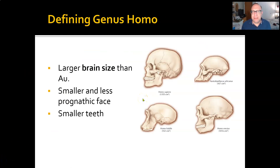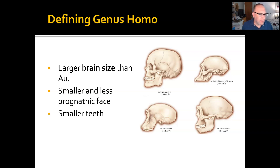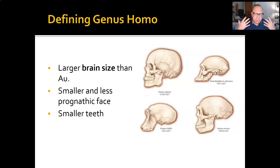The first thing you'll notice about genus Homo in general is that it is the first time we have an increase of brain size that begins to outpace increases in body size. All of genus Homo has larger brains than australopithecines, significantly more, and their faces are significantly less prognathic — more agnathic. Smaller faces and smaller teeth overall.